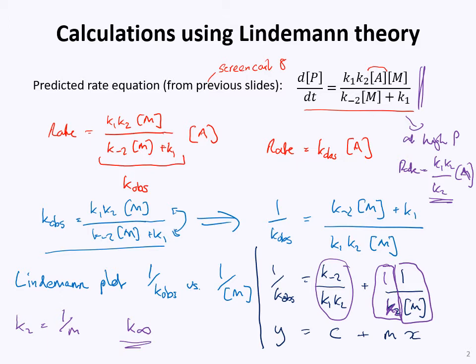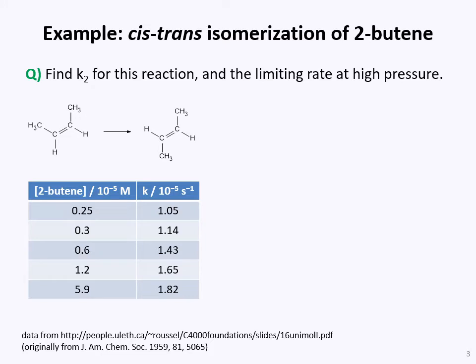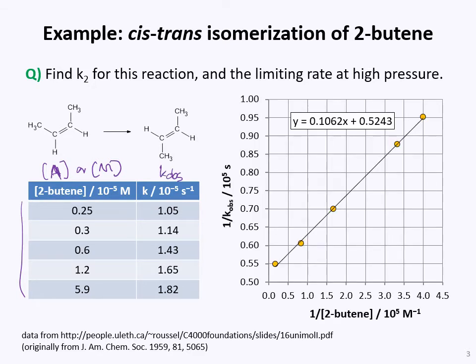Let's look at an example question of the kind that might appear on a problem sheet or assessment. We have some data: concentrations of species M and corresponding values of k_obs. When we plot 1/k_obs versus 1/[M], we actually do see a straight line in this case. I should note that this is not always the case, as I'll show in a moment.